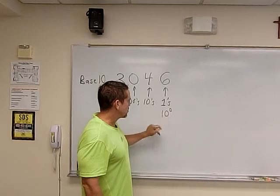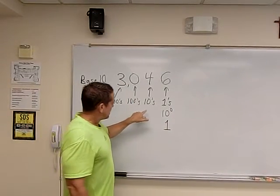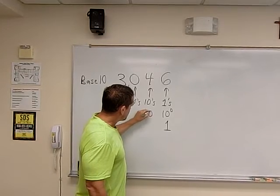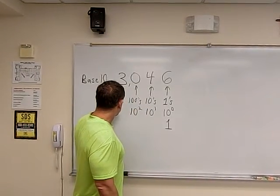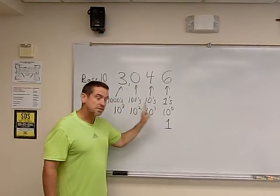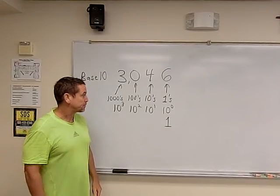Anything raised to the zero power is one. This will be ten to the first power, this will be ten to the second power, and this will be ten to the third power. So each time we move up a place, we move up to a higher power of ten.